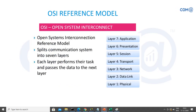OSI stands for Open System Interconnect. This is a standard framework for having a common standard among network devices in the industry, to provide standard infrastructure details for manufacturers so they can create a standard environment and communicate between devices. Prior to this, different manufacturers were manufacturing devices to their own standards, making it impossible to interconnect or communicate between them.